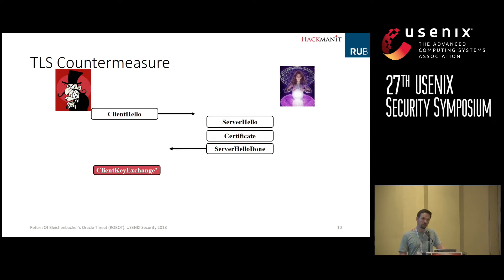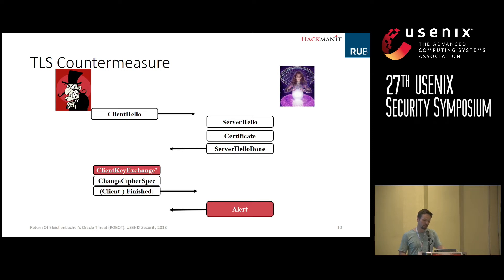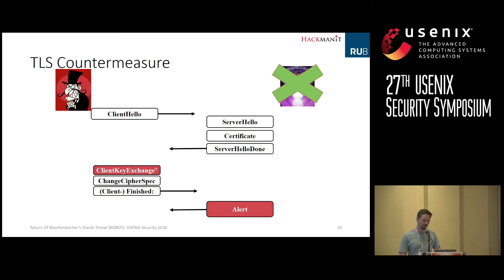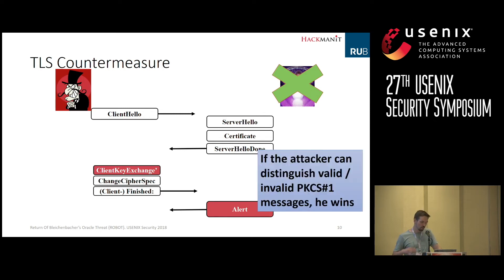This handshake can then be performed several times, and the attacker can decrypt the original connection. The countermeasure applied in the TLS specification is, in theory, very simple: the server needs to always respond with the same alert message, so that the attacker cannot distinguish valid from invalid messages. If this is implemented correctly and the attacker cannot distinguish valid from invalid messages using alerts or other side channels, then the attacker has no oracle and cannot perform Bleichenbacher's attack.